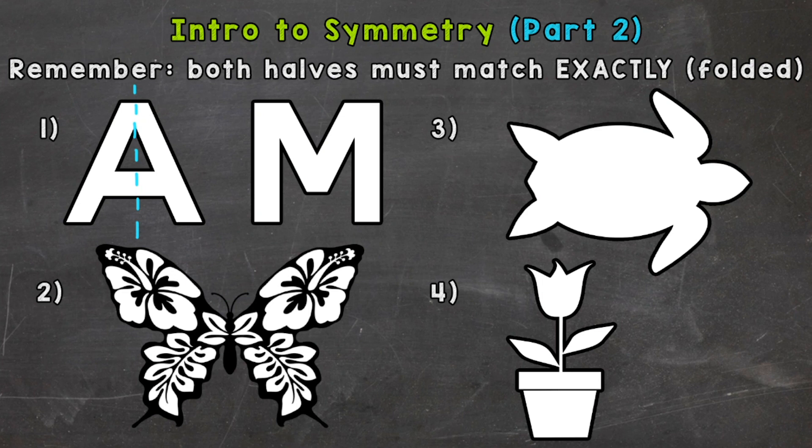As far as the M, we can do the same thing. A vertical line of symmetry, cutting this letter in half, and if we folded both those halves, try to picture folding both those halves on top of each other, they would match exactly. Therefore, that's a line of symmetry, and that particular M is symmetrical.